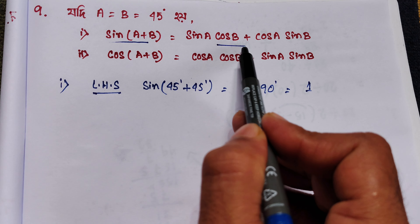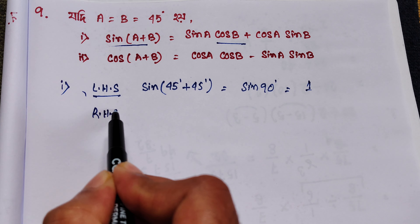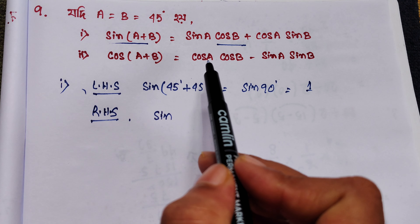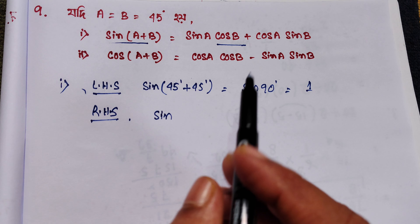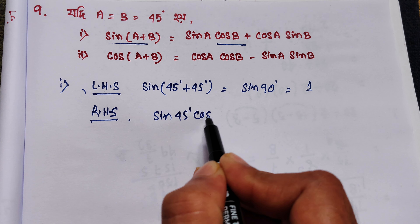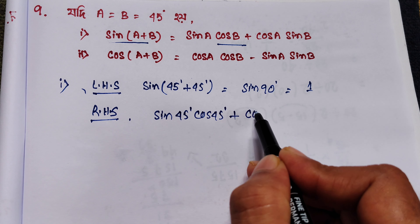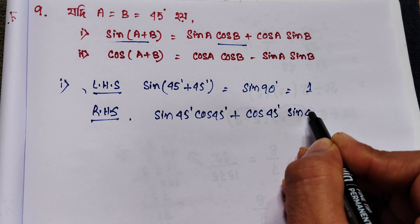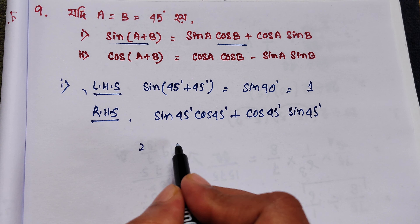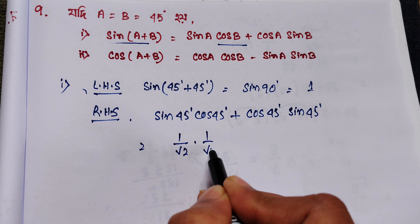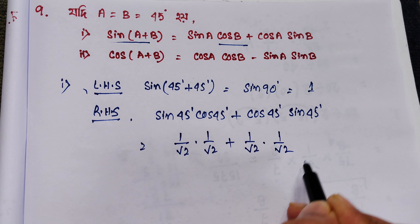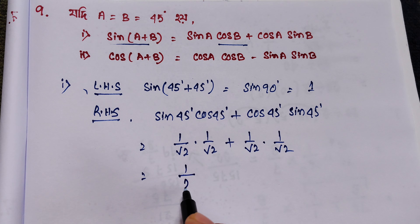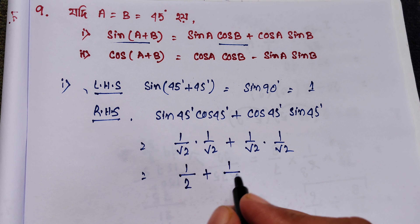Now we write the right hand side. So sin a cos b means sin 45 degrees into cos 45 degrees, plus cos 45 degrees into sin 45 degrees. Since 45 degrees is 1 by root 2, this becomes 1 by root 2 into 1 by root 2, plus 1 by root 2 into 1 by root 2. Root 2 into root 2 equals 2, so we get 1 over 2 plus 1 over 2.